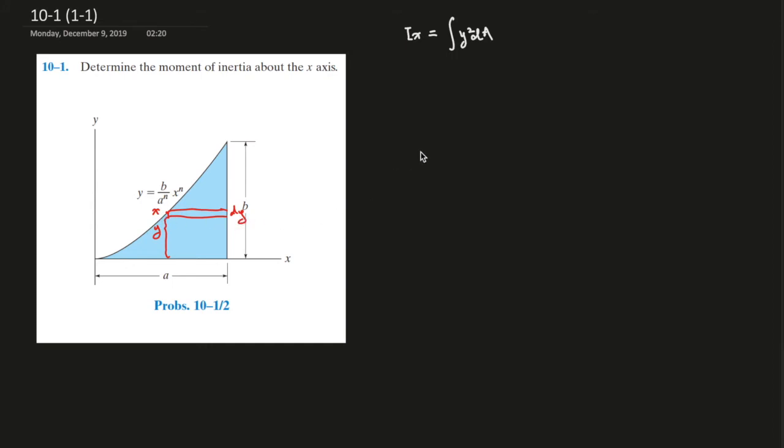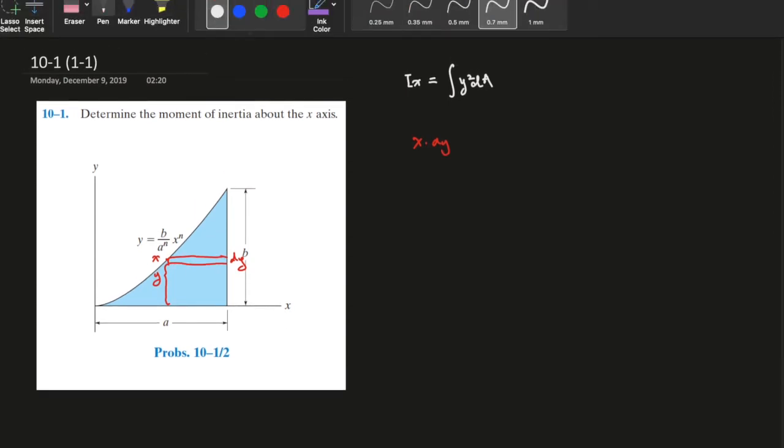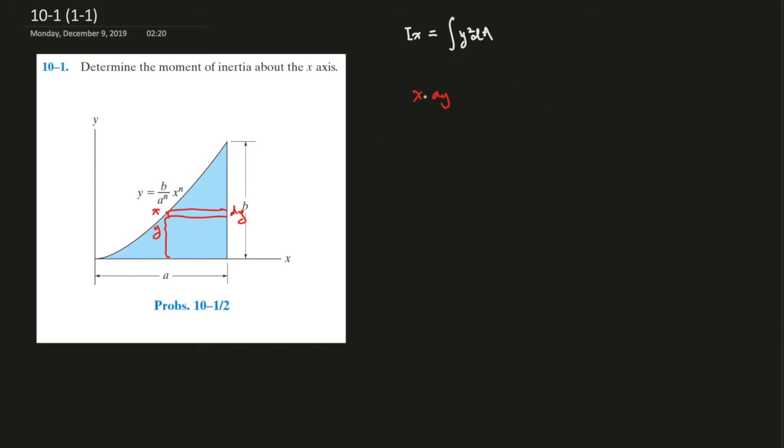So dA here, what is dA? Look at over here: dy times dx, right? Because we're going this way, so we're plugging y values to give us x. So it's x times dy, and the sum of that gives you the dA. Because, you know, this is the entire thing over here, simple calculus.